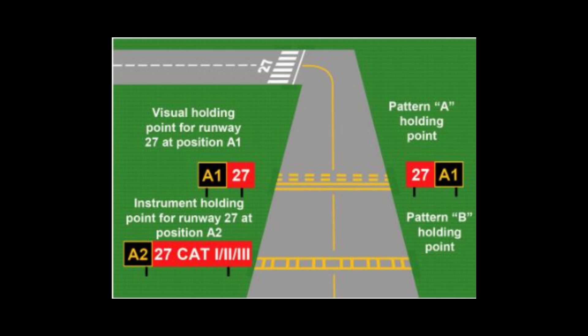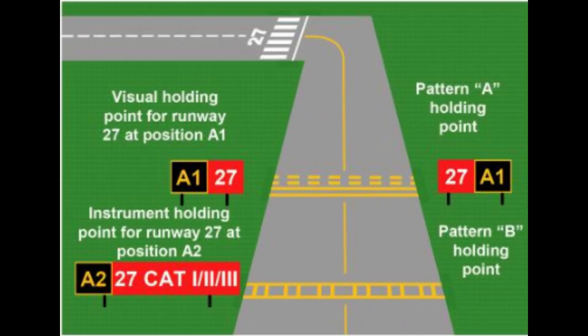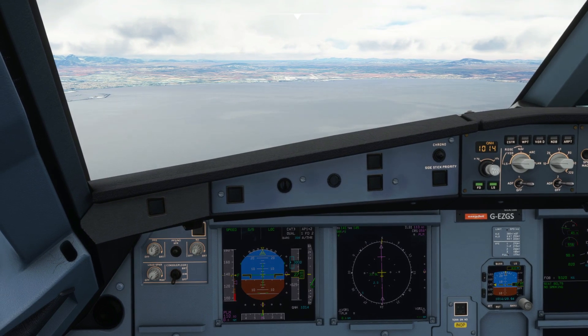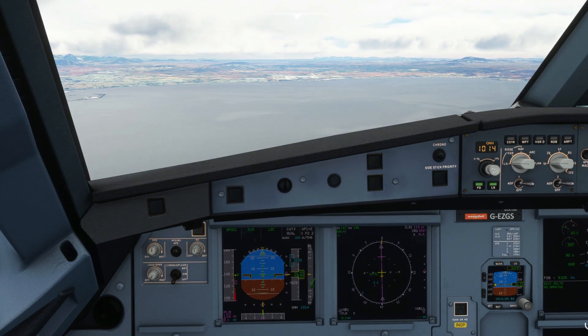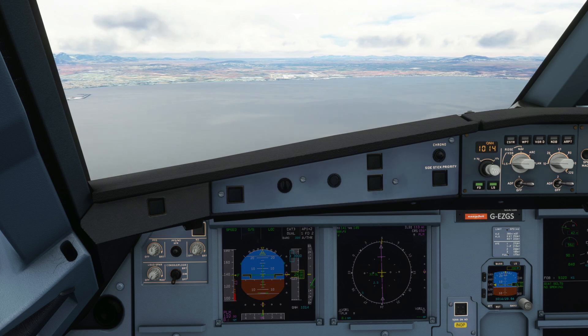When the weather is good, airports will use the visual holding points. If an aircraft taxis to the visual holding point, the protected areas of the ILS system are no longer protected — the aircraft could interfere with the ILS signals that an aircraft coming in to land would be receiving. When visibility at the airport starts to drop below Cat 1 minimums, the airport might move into what is called low visibility procedures. Each airport has its own rules for when these are activated. If low visibility procedures at your landing airport are not currently in place, you cannot be guaranteed that the critical areas of the ILS will be protected, because aircraft will not be holding at the Category 1, 2, or 3 instrument holding points.